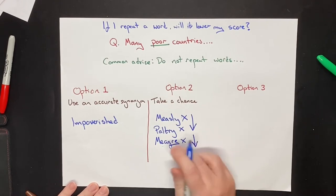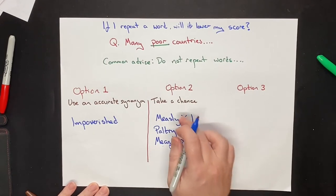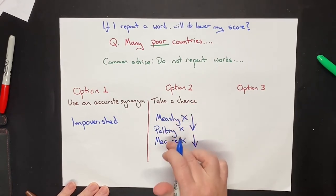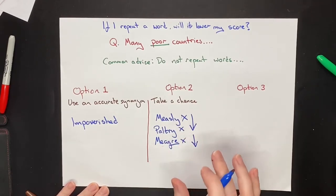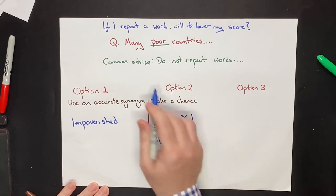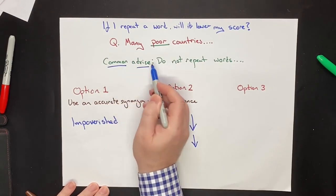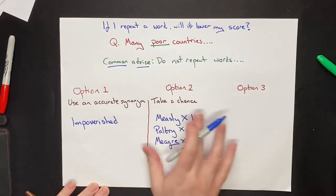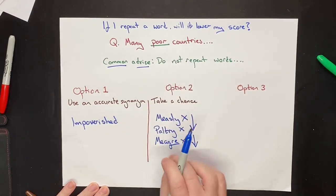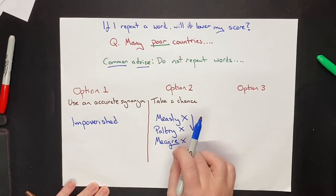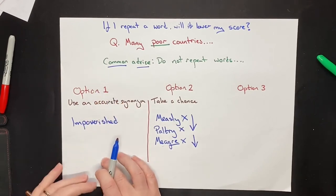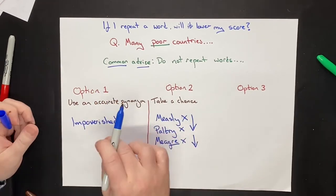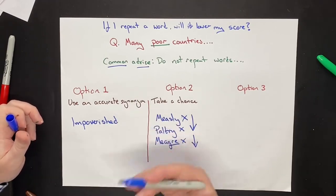Again, you are lowering your score. If you're using words that you don't understand fully, and you're taking a chance, then the meaning might be wrong, the spelling might be wrong, it might be inappropriate, the style might be wrong. There's so many things that could be wrong. Why do students do this? Because the common advice that most people are given is do not repeat a word. This forces students to use words inaccurately, because most of the time, their vocabulary is not wide enough to accurately change the word over and over and over again.